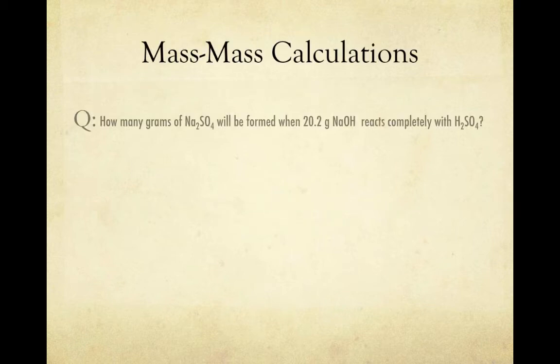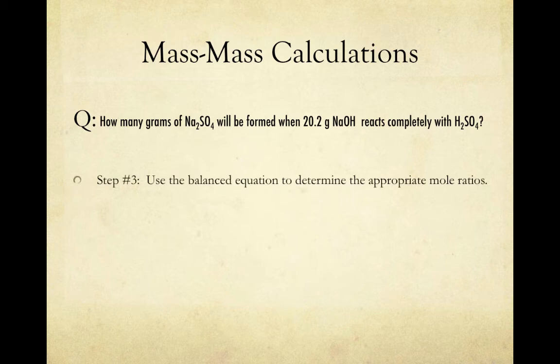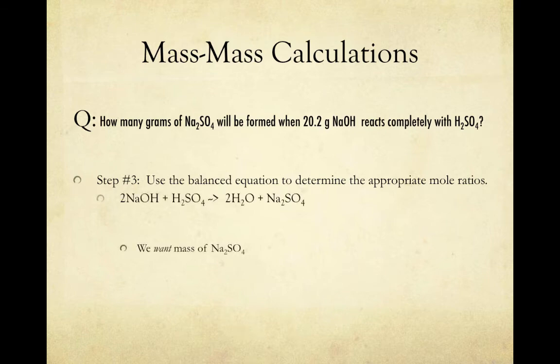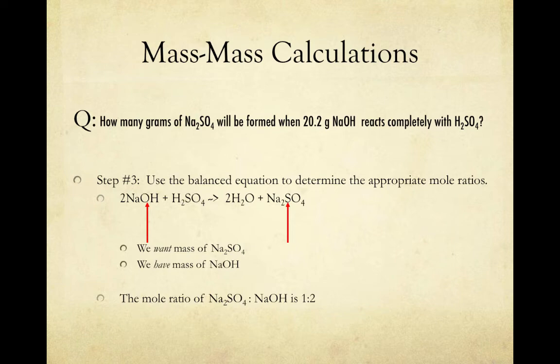Now that we know how many moles of reactant we have, we can use our balanced equation to determine how many moles of product we'll be able to form. First, let's isolate our mole ratio. We want the mass of Na2SO4. We have the mass of NaOH. Therefore, our relevant mole ratio is 1 to 2. For every 1 mole of Na2SO4 we want to form, we need 2 moles of NaOH.